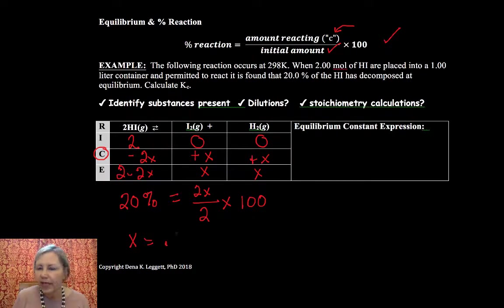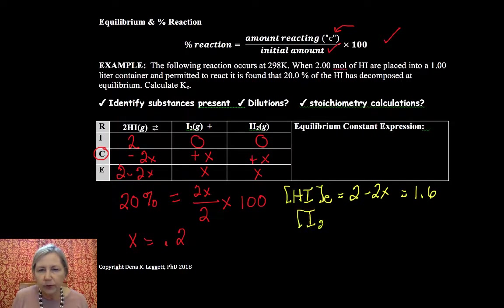So if I solve for x, I get 0.2. Now if I plug in 0.2 here, so I have 2 minus 0.4, I'm going to get my HI at equilibrium to be 2 minus 2 times x, and that's equal to 1.6.